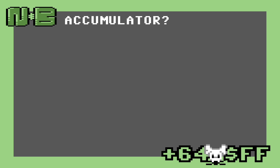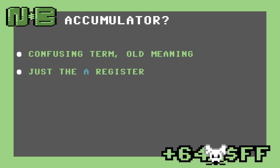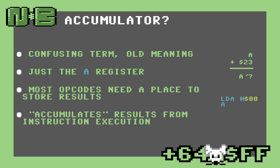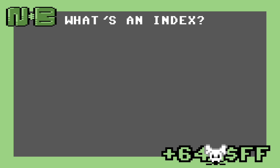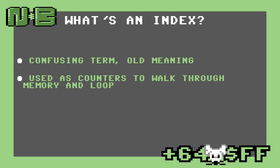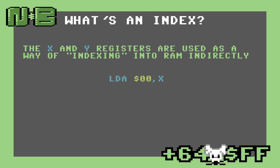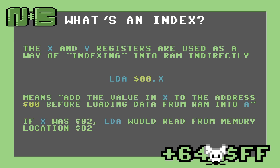I've used this accumulator term a few times — what is it exactly? Well, it's a slightly confusing term with an old meaning. Basically, it's just a synonym for the A register. Whenever an opcode has a result from an operation, such as addition, it has to store the results somewhere. So what we mean is that the A register accumulates the results from instruction execution. So what's an index register? Like the accumulator, this is a slightly confusing term with a really old meaning. An index is just a counter used for walking through memory, kind of like how you would use your index finger to page through a book. Since they're still registers, they can still kind of be used like the accumulator to hold temporary values. Take this zero-page indexed LDA instruction for example — this means add the value in X to the address zero before loading data from RAM into A. Basically, just think of X being added to the address in the instruction.